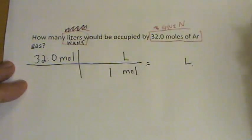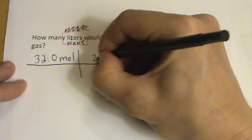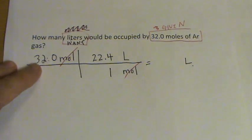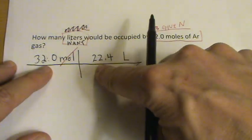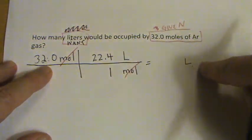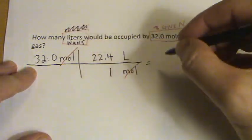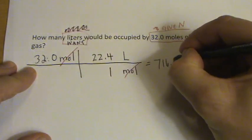One mole of any gas is 22.4 liters. Moles cancels out, so we're just taking 32.0 times 22.4 liters. So it's 32.0 times 22.4, and that ends up to be 716.8 liters.